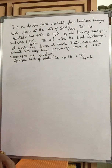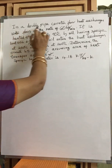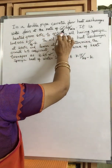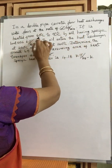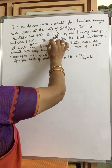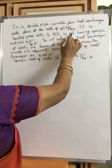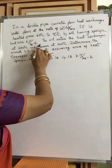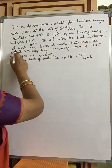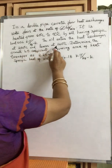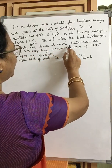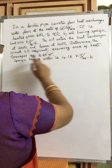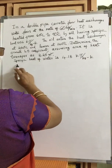First we shall read the problem carefully. In a double pipe counter flow heat exchanger, water flows at the rate of 60 kg per minute. It is heated from 60 degrees centigrade to 90 degrees centigrade by oil having a specific heat of 0.36 kilojoules per kg per Kelvin. The oil enters the heat exchanger at 200 degrees centigrade and leaves at 140 degrees centigrade.